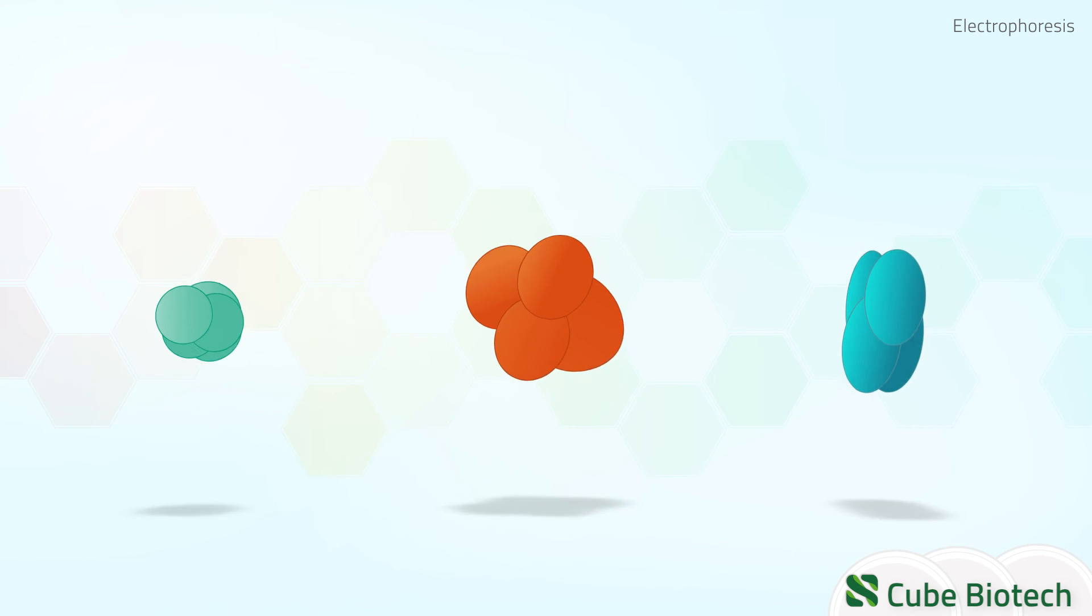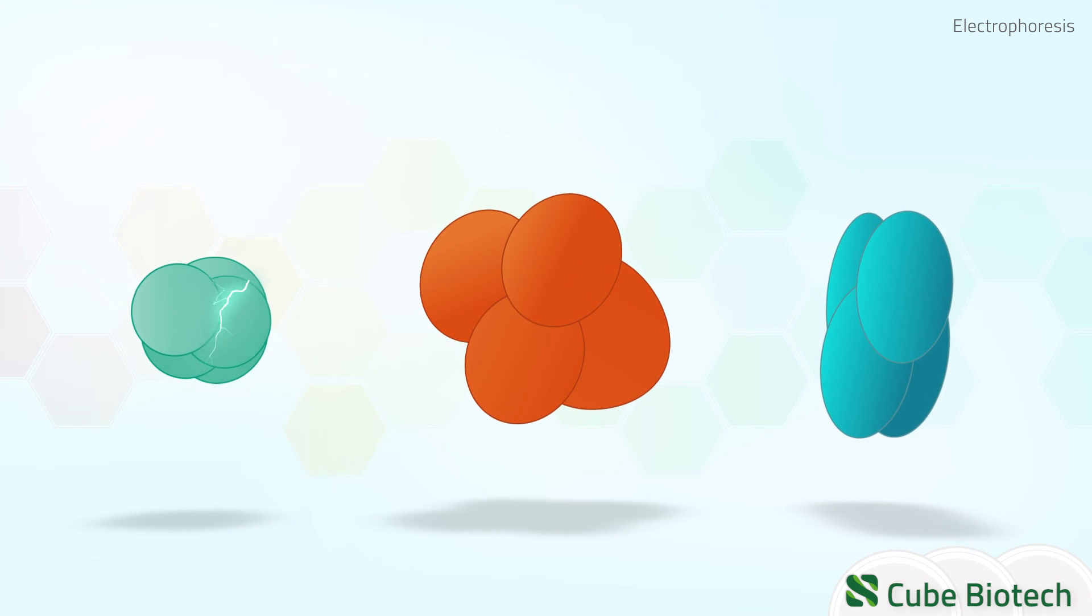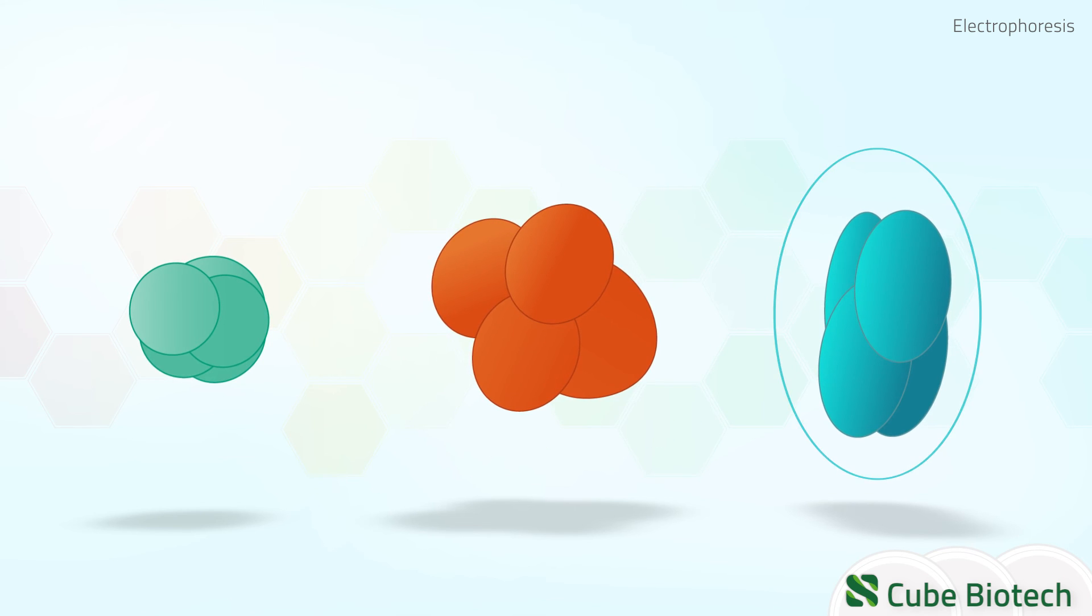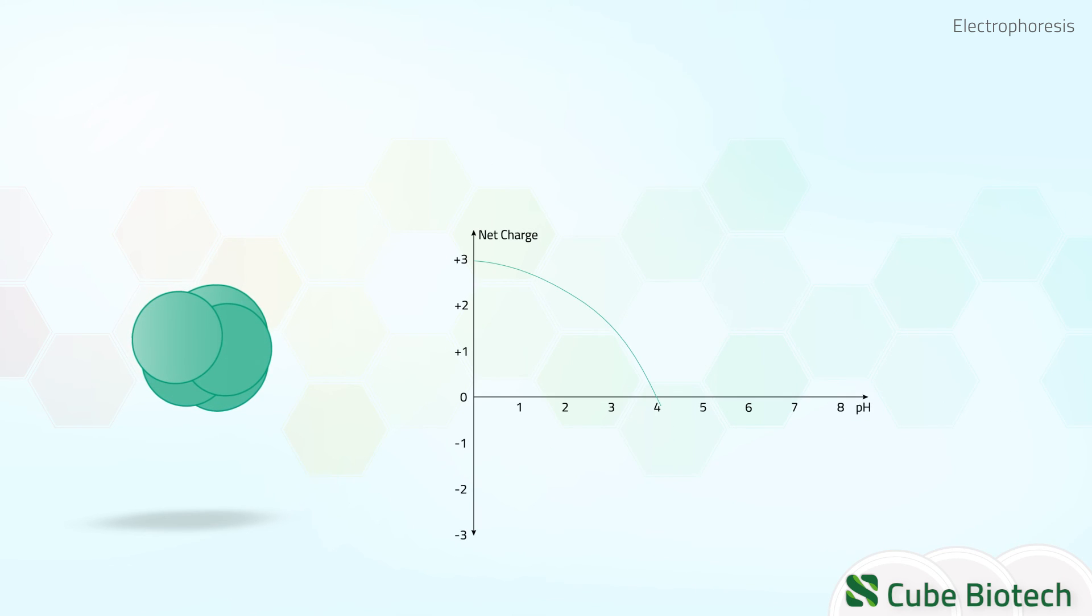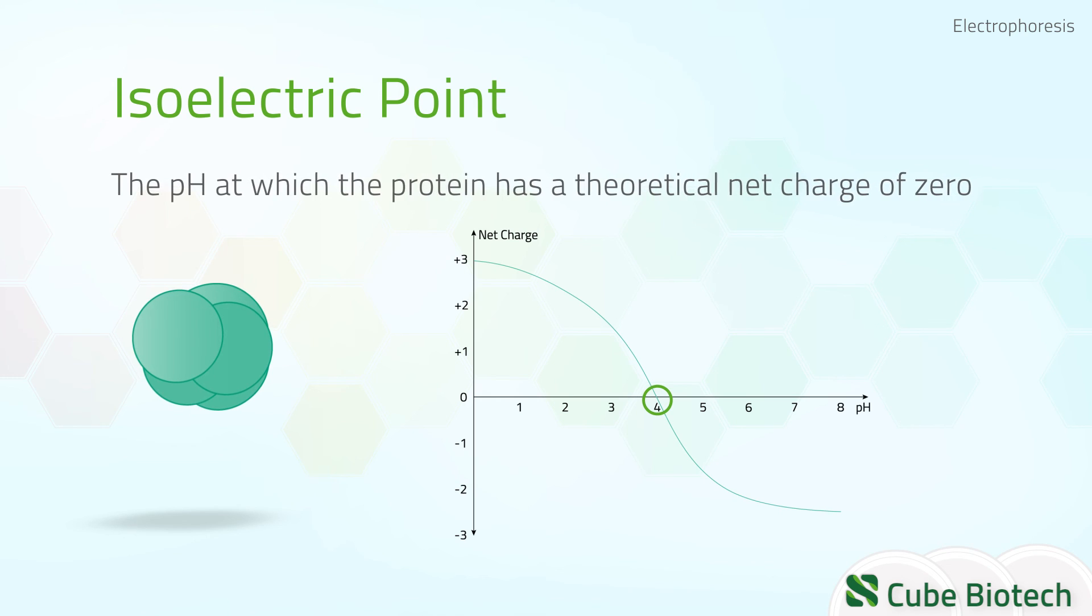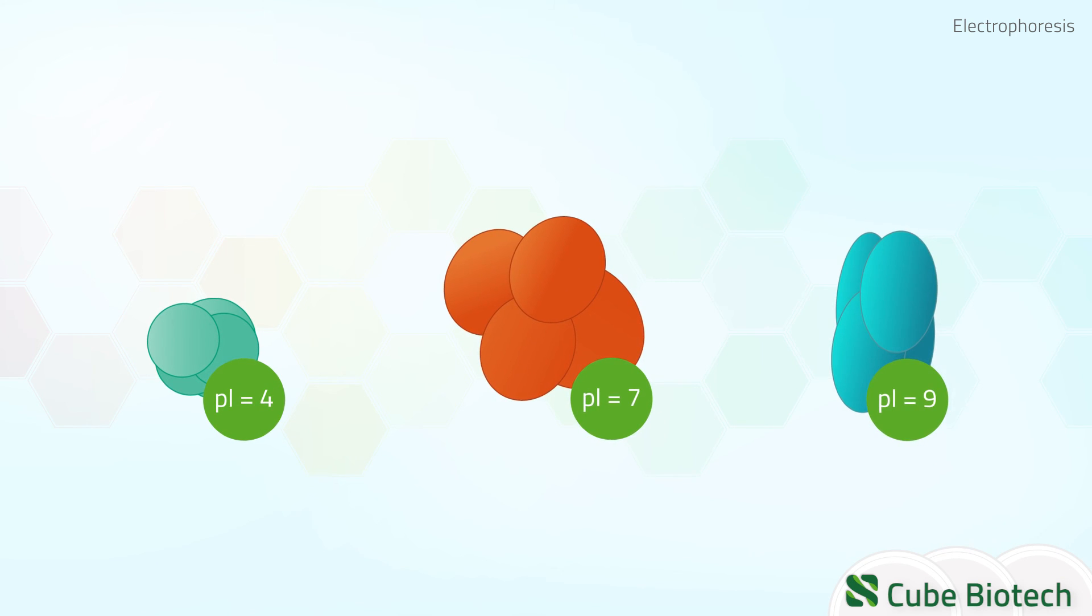Electrophoresis sorts proteins by their charge, size and shape. A protein's charge depends on the environmental pH. The isoelectric point of a protein, in short PI, is the pH at which the protein has a theoretical net charge of zero. When the pH is above a protein's PI, it will carry a negative charge. In case the pH is below a protein's PI, it will be positively charged. Proteins differ in their PI and thus have different charges in the same environmental pH.